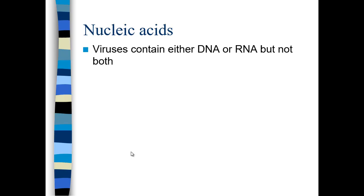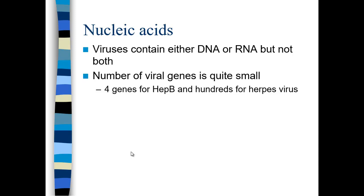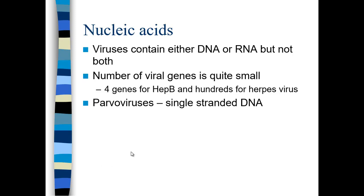Viral nucleic acids can be DNA or RNA, but not both. Compared to the genome of even a bacterial host cell, the number of viral genes is quite small — with only four genes for hepatitis C, which is among the smallest viruses, or hundreds of genes for the herpes virus. The smaller the number of genes, the more this particular virus will rely on host cell proteins to assemble its nucleic acids, capsids, and eject from the cell.